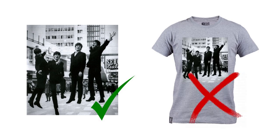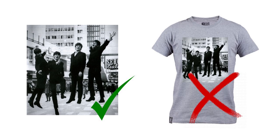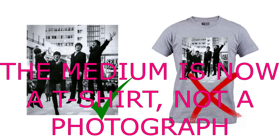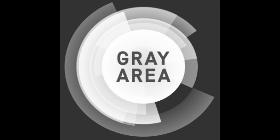In short, you can use the public domain photograph as a photograph. But you can't use the public domain photograph to sell print-on-demand merchandise, because if the Beatles' likeness is shown on the print-on-demand merchandise, the trademark would be violated. So, is there a gray area in all of this? The answer is yes.